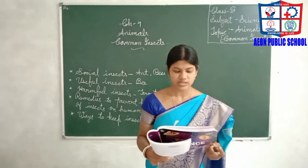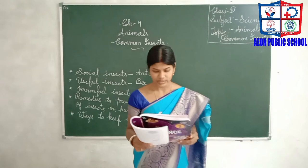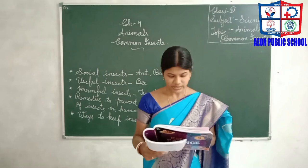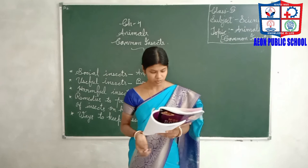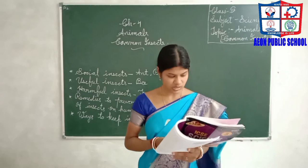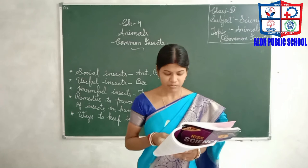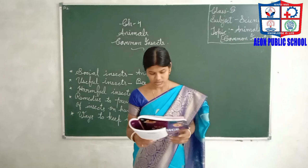Dragonflies eat mosquitoes, helping to control their population. Now let's look at harmful insects. Many insects are harmful to us — they spread diseases and damage crops, stored food, books, furniture and clothes. Insects that bother us in houses include mosquitoes, termites, lice, cockroaches, houseflies and bed bugs. These are the insects that cause us worry or distress.